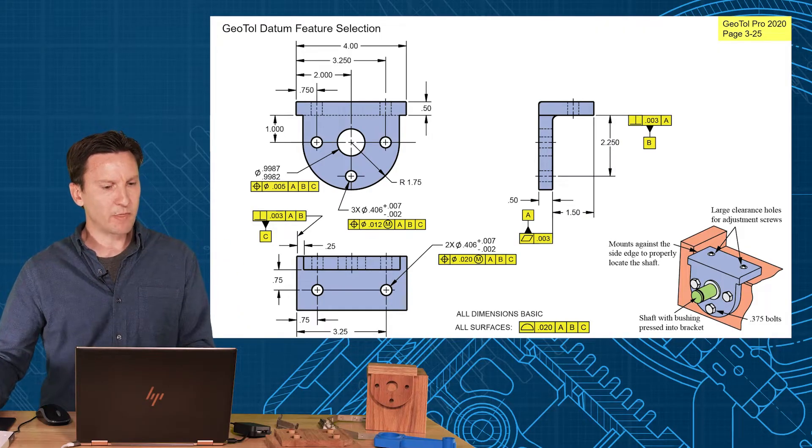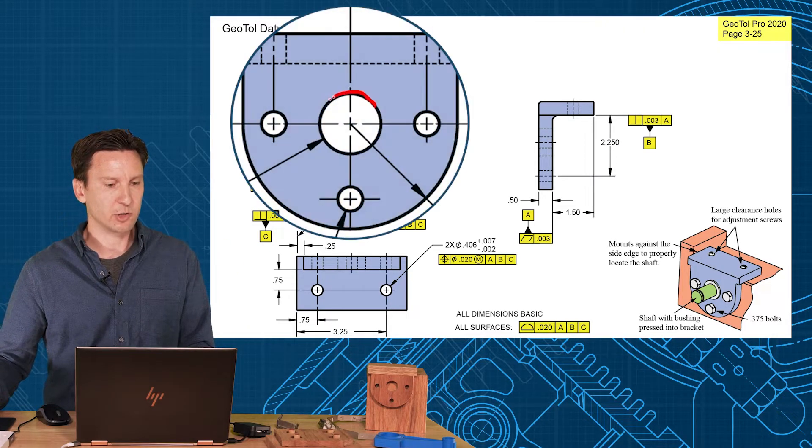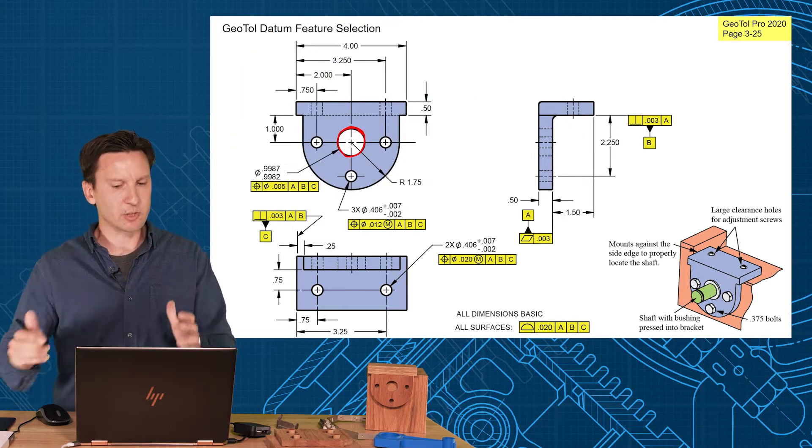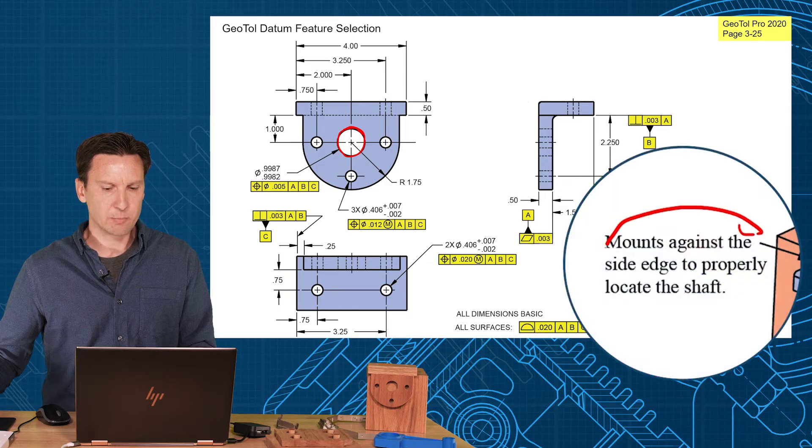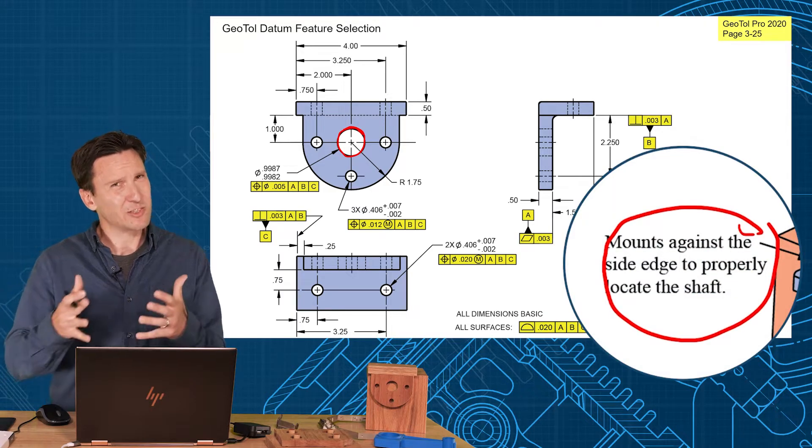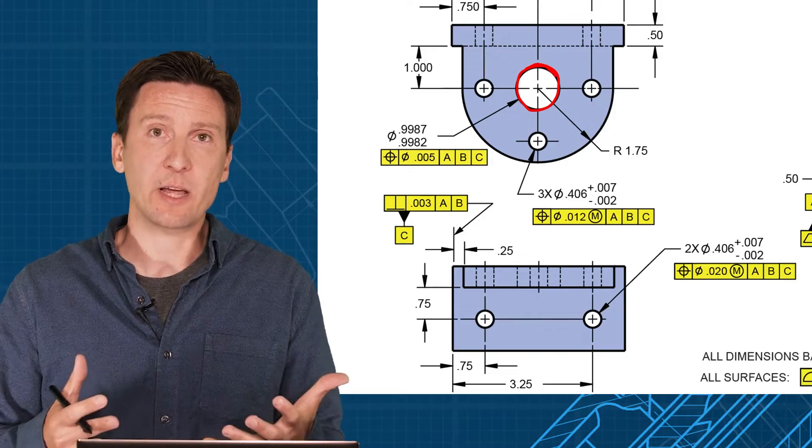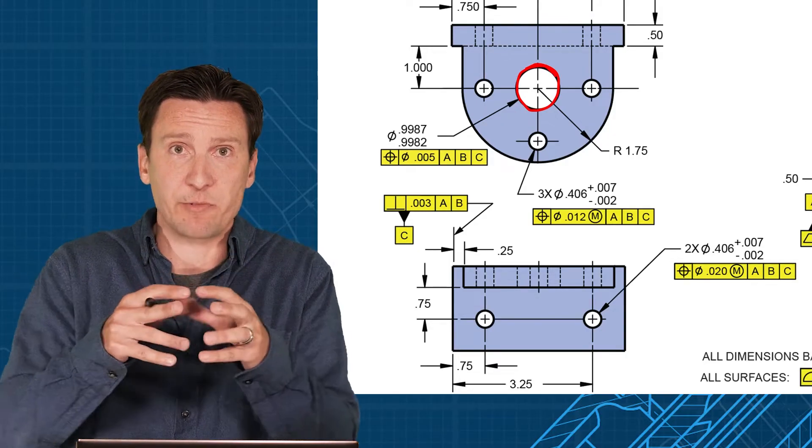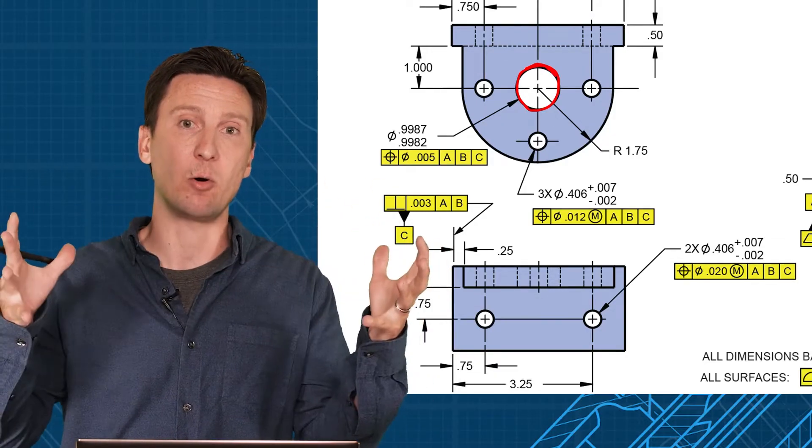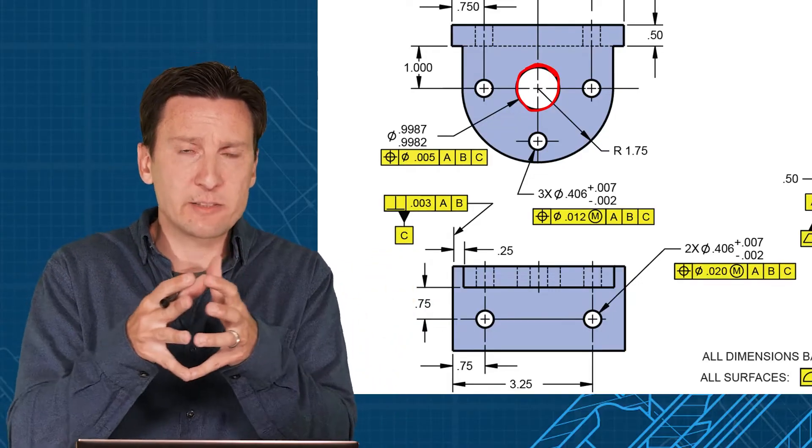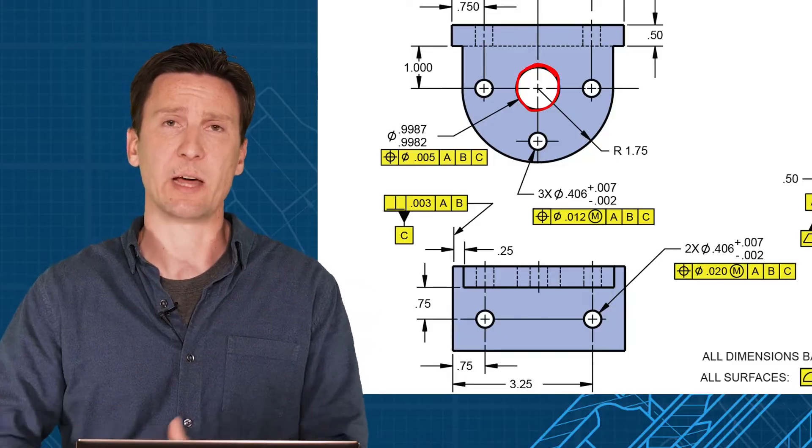Now sometimes I get people, they say, well I want that hole to be the datum feature there. Shouldn't that be the primary? I don't know about primary—maybe the tertiary. But in this case, properly mounts against the side edge really tells you the edge is the leader. Maybe if that functional requirement wasn't there, I would have the hole as my tertiary datum feature and have everything spidering off that hole. So what is the function? How does it work? Is the hole that locates it, or is it the edge? You want to pick that accordingly.